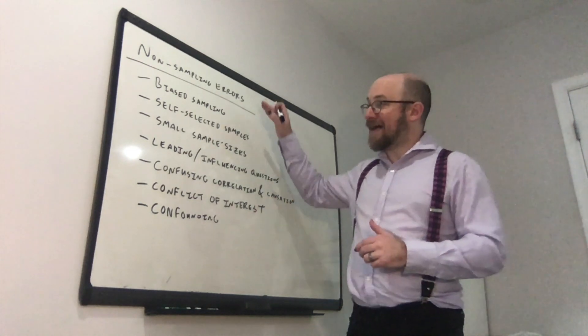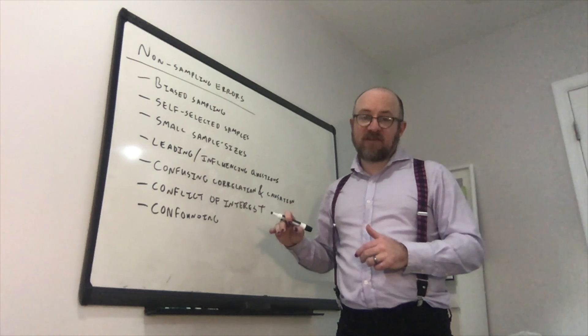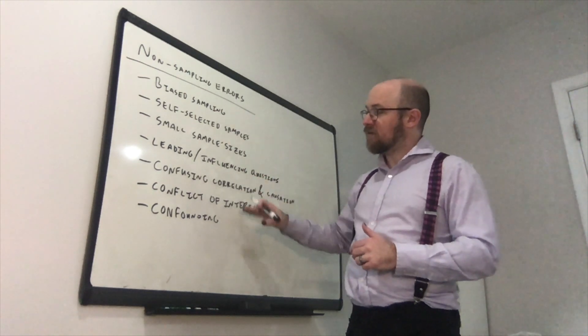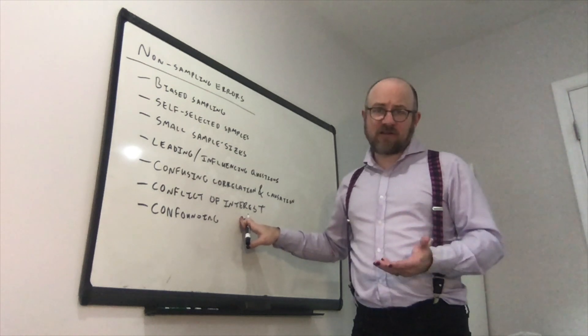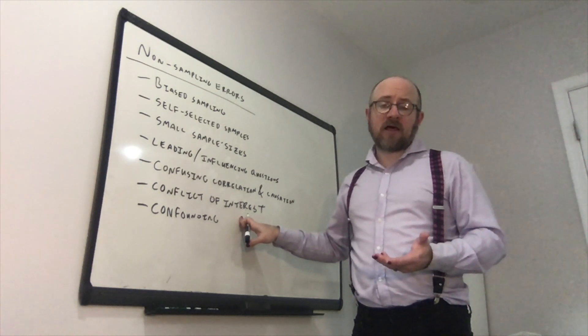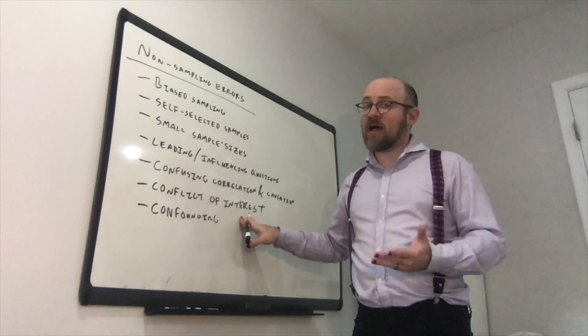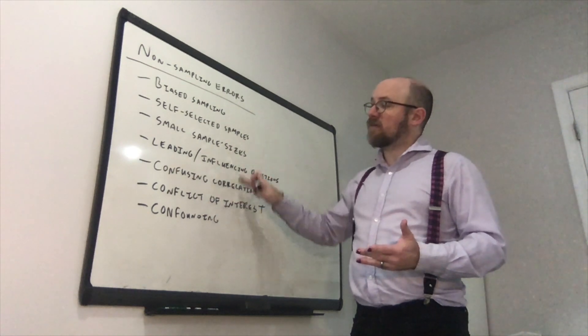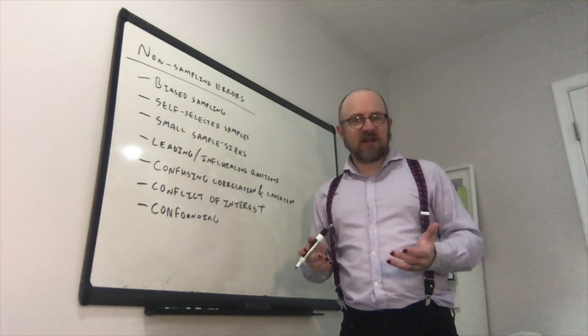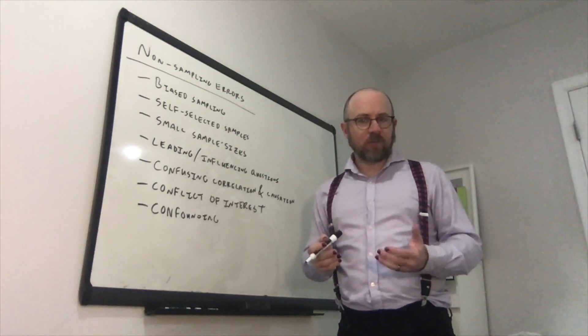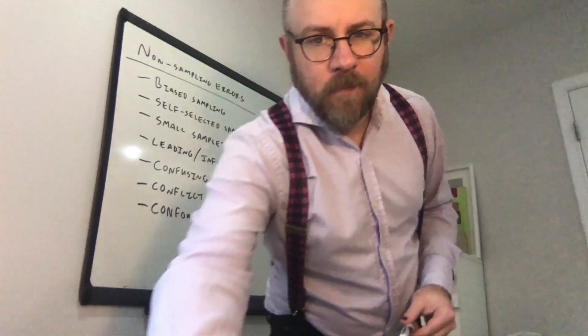So, those are different non-sampling errors, you should always try and avoid these. If you find a study that does one of these, so for example, if there's a conflict of interest, don't necessarily trust the data that they're getting. Maybe it's good, maybe it's not, but all of these kinds of things, if you see these in a study, it should make you wonder, is this a good study, are these results true?